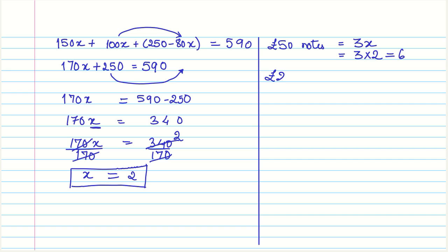Then we said that the £20 notes, £20 notes were equal to 5 times x or 5 times 2. That is equal to 10.